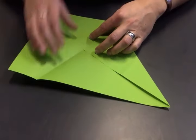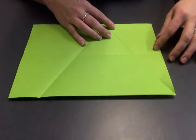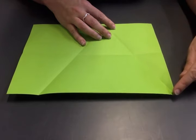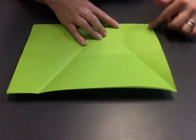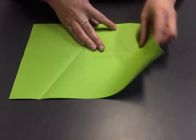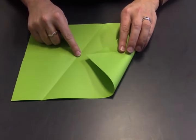Open out both of these and now we're going to go with the adjacent corner, so not this one, this one. Put that on the point where your creases intersect.